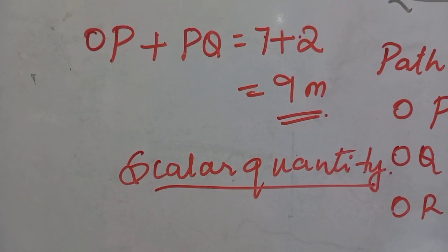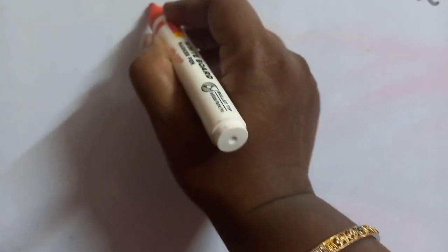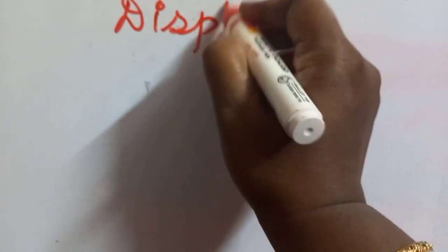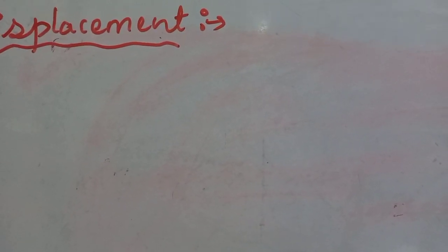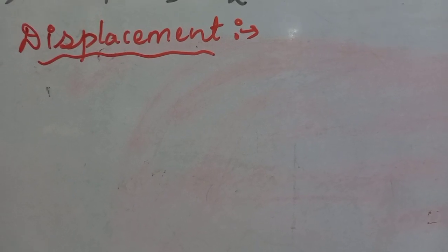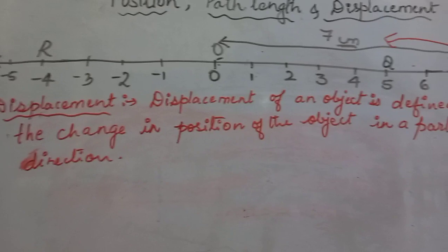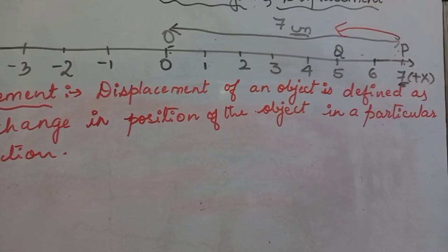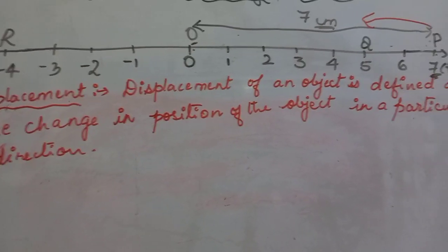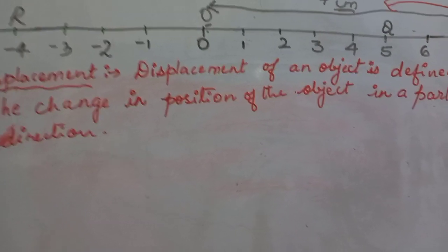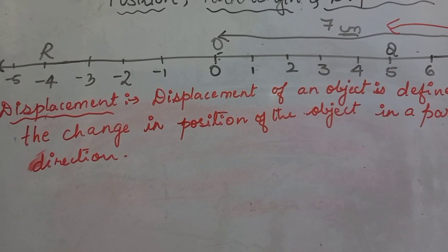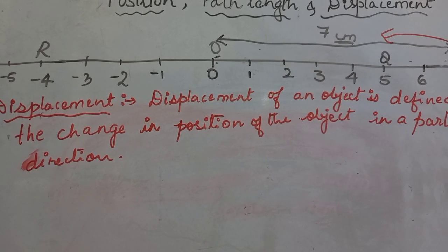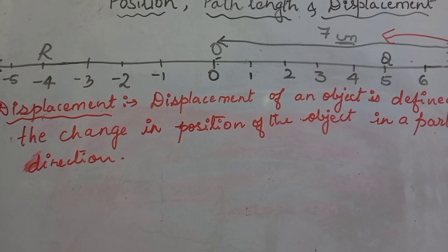Now let us speak about displacement. Displacement of an object is defined as the change in position of the object in a particular direction. Displacement has both magnitude and direction, and the magnitude of displacement is the shortest distance between the initial position and the final position.